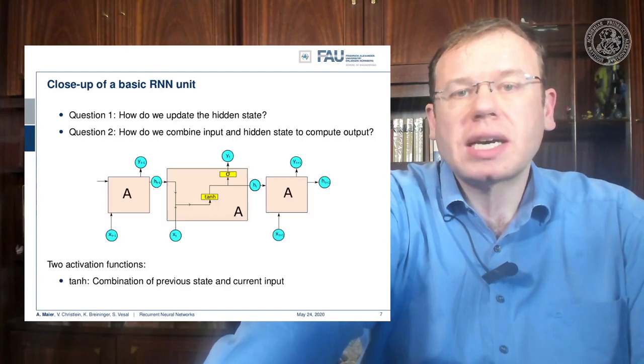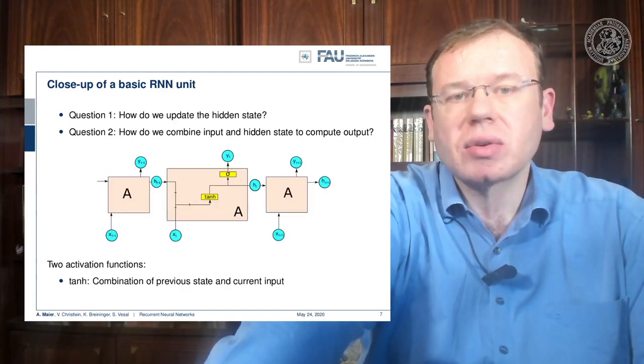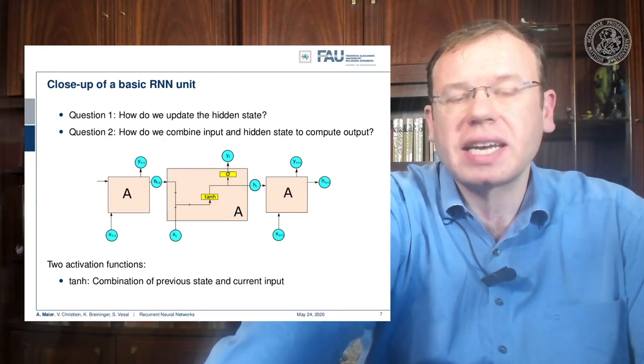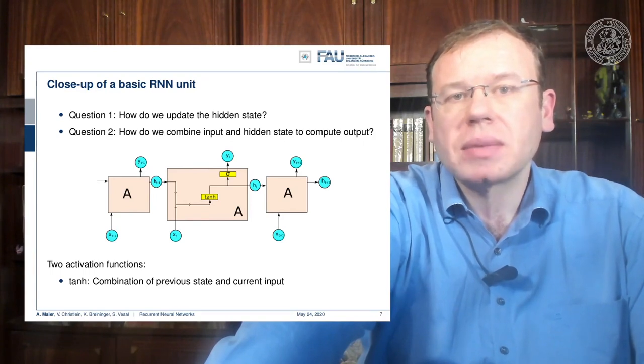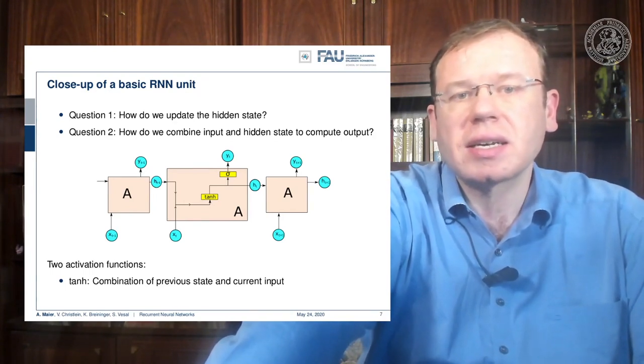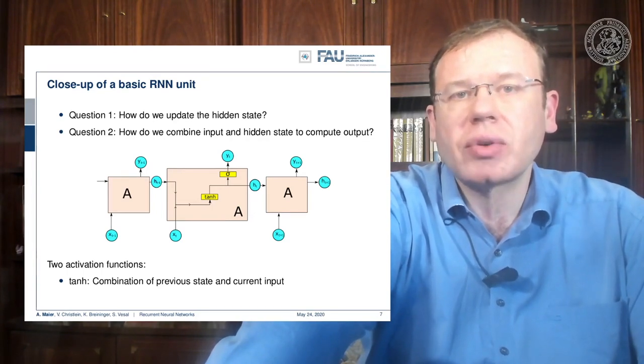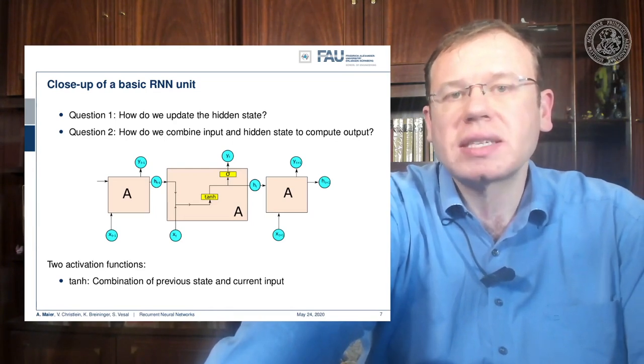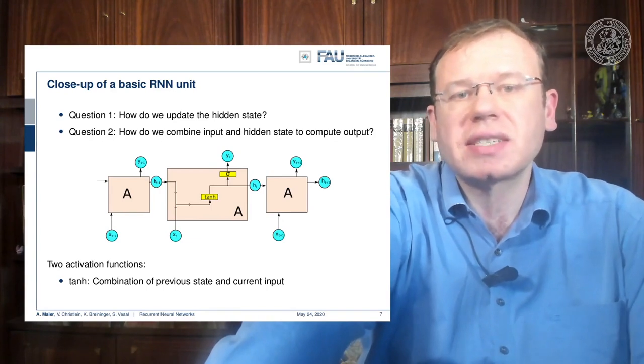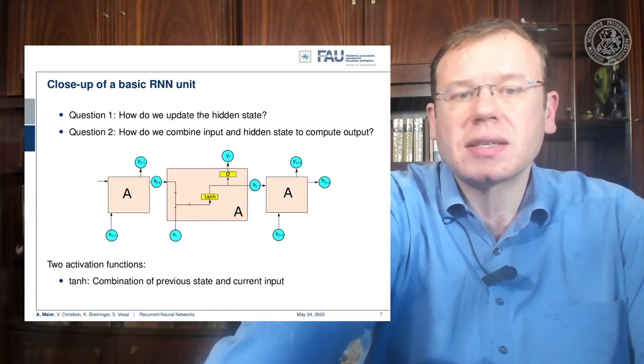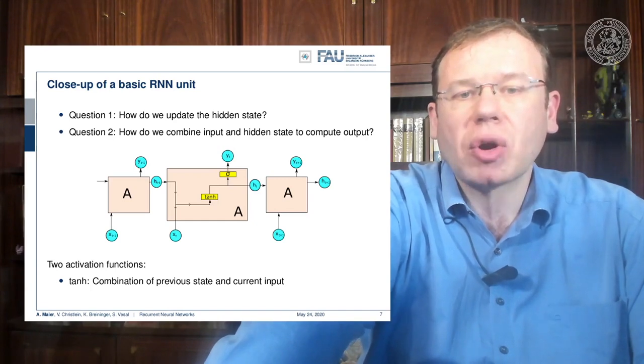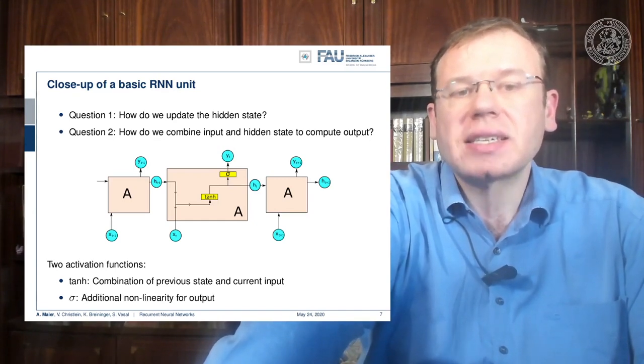So we do that by opening the cell and looking at the inside. And what you see here is that we essentially concatenate the hidden state with the new input, then feed it to a non-linearity, here a tanh hyperbolicus. This produces a new state, and from the new state we are generating the new output with a sigmoid function and hand the new hidden state over to the next instance of the same cell. So we have two activation functions, the tanh for combining the previous state and the current state, and the sigmoid non-linearity for generating the output.